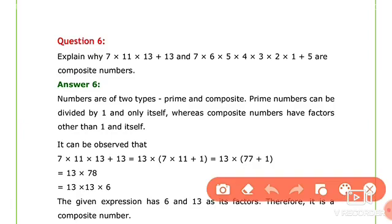Hello students, in this session we will continue with exercise number 1.2, question number 6. Explain why 7 × 11 × 13 + 13 and 7 × 6 × 5 × 4 × 3 × 2 × 1 + 5 are composite numbers.